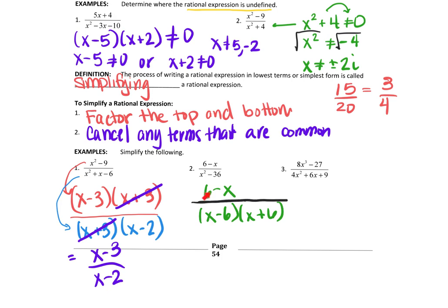This right here is something special, because notice that 6 minus x is the exact opposite of x minus 6. And what do I mean by that? Here the 6 is positive, here the 6 is negative. Here the x is negative, here the x is positive. So they're the exact opposite. Well, we can fix that by multiplying this by a negative 1, and it makes them the exact same terms.